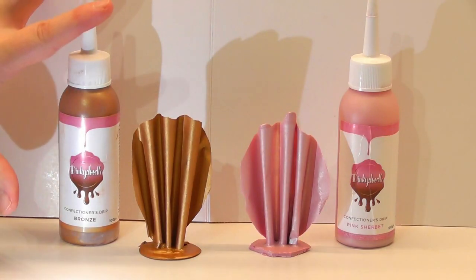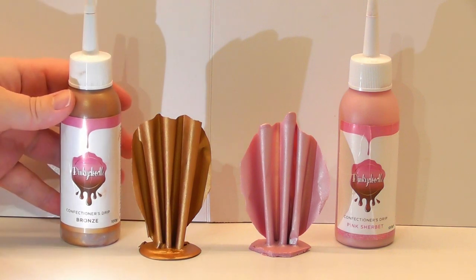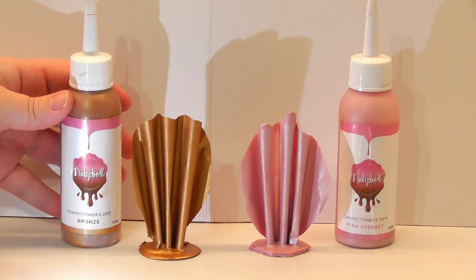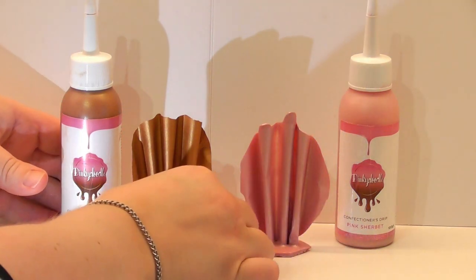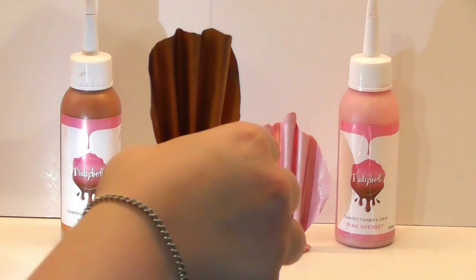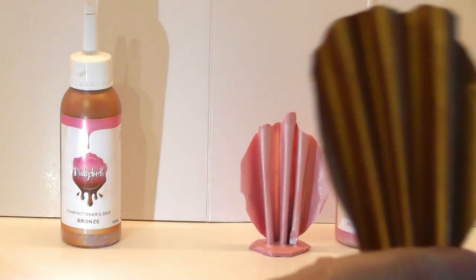Hi everyone, welcome back to Rachel's Enchanting Cakes. For this very short tutorial I'm going to show you how to make these very effective sails. These have been made from the confectioners drip range so they're already metallic, really easy to do, no painting involved.